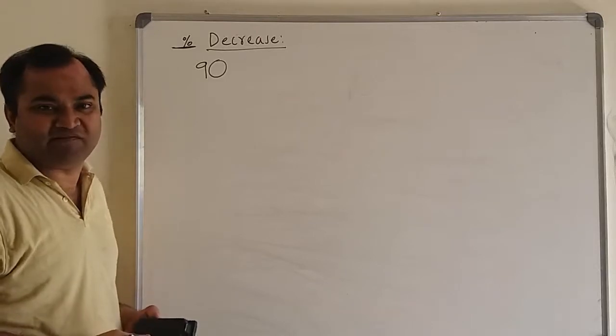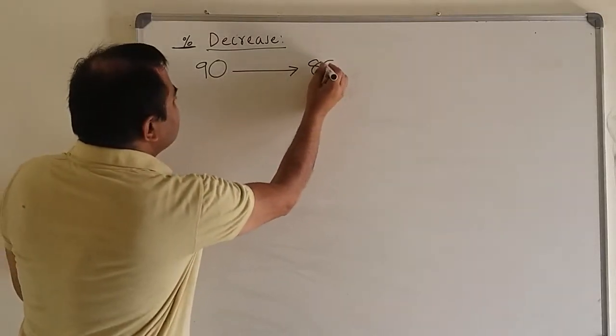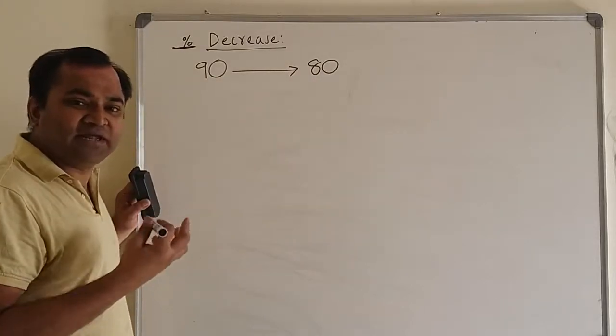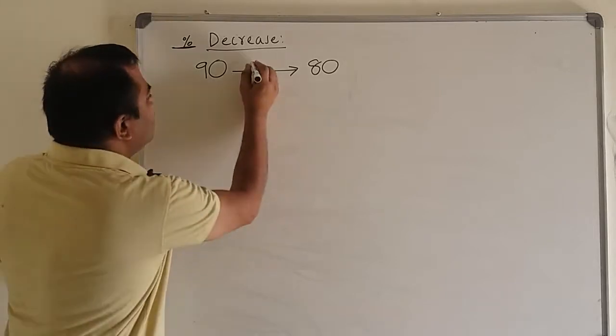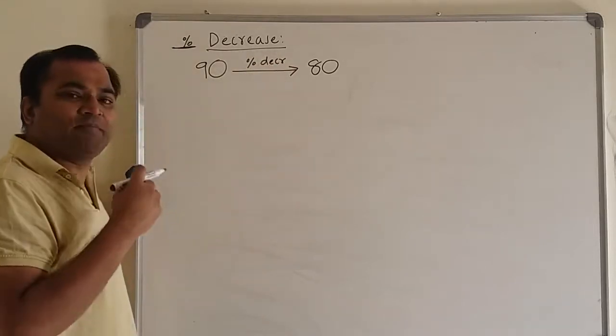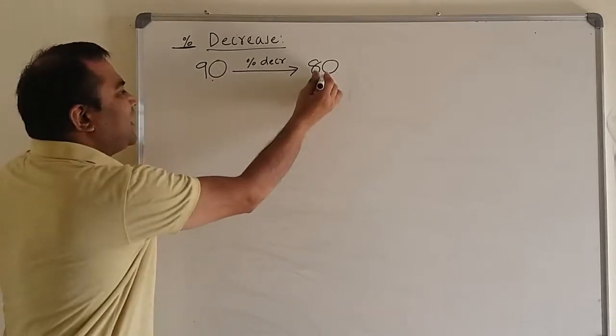So there is a decrease, but find the decrease in terms of percent. What is the percent decrease in the price of the book which goes down from 90 to 80?